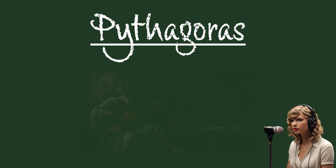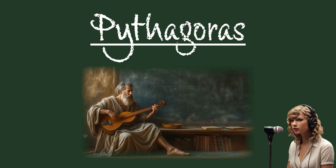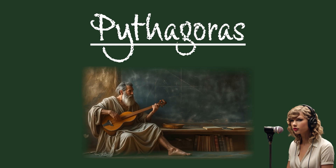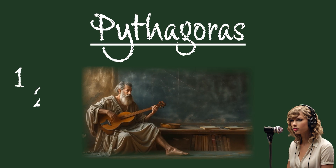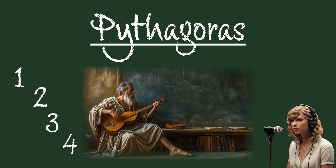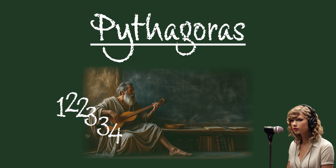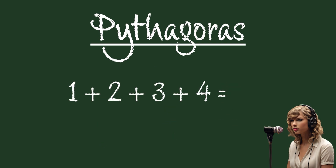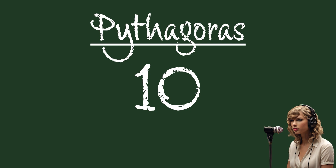But for real though, without Pythagoras' contributions to music, there would be no Taylor Swift. He pioneered the mathematical study of music and discovered that the most harmonious musical intervals are created by the simple numerical ratio of the first four natural numbers, which derive respectively from the relations of string length. The octave, the fifth and the fourth — the sum of those numbers is ten, and ten was what Pythagoras would call the perfect number because it contained in itself the whole essential nature of numbers.